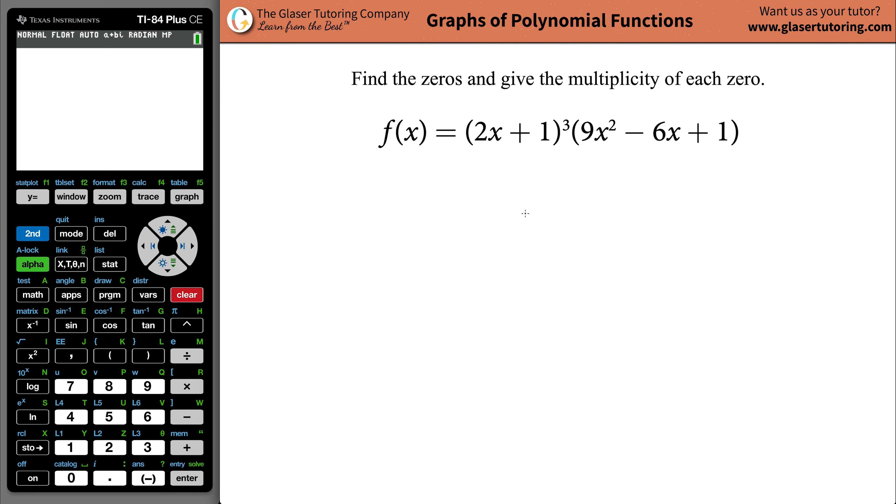Now, what does it mean to find the zeros? Remember, the zeros are just the locations on the graph where the function touches or crosses the x-axis. In other words, it's the x-values where the overall function value is equal to zero. Now, to get a feeling of this, let's just graph this right off the bat.